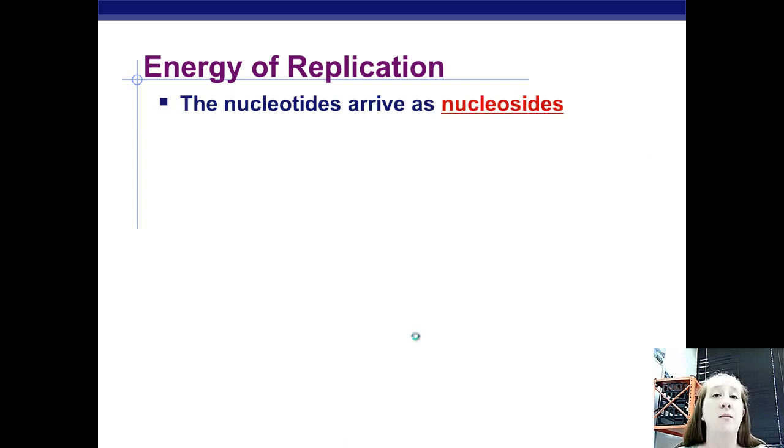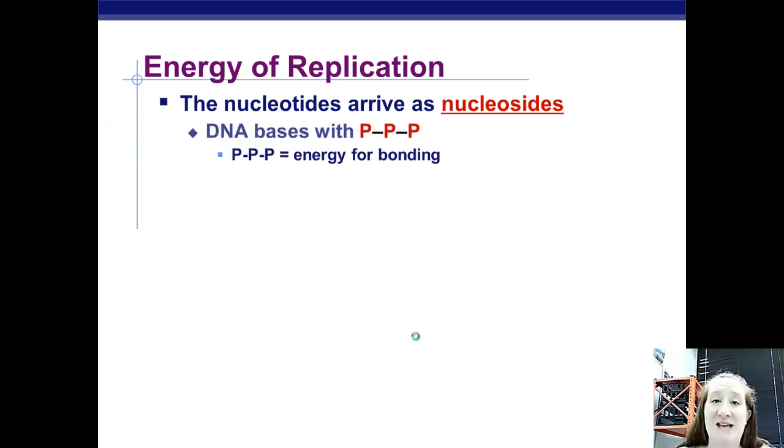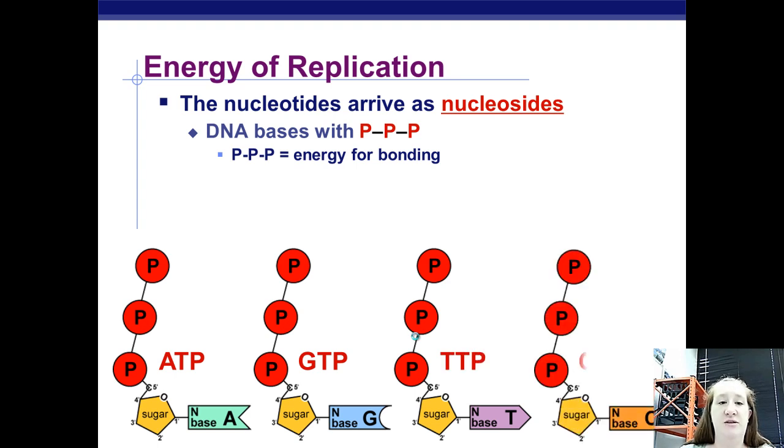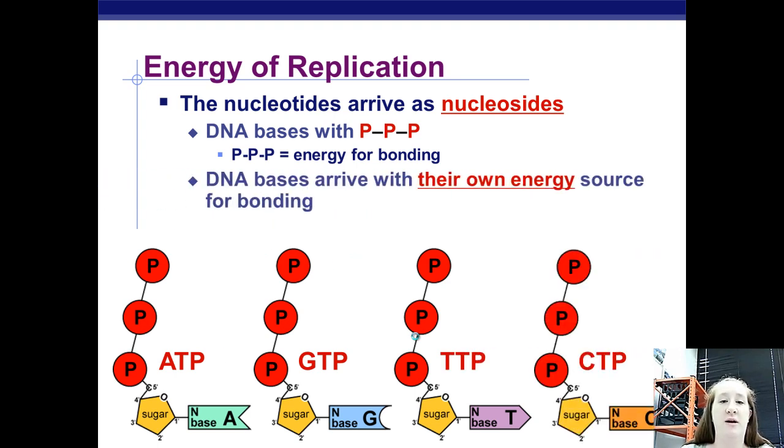So, when nucleotides come over to DNA to help with DNA replication or the building of a DNA molecule, they're going to come over as nucleosides, not nucleotides. And when they're nucleosides, they're in that TP state. They've got the three phosphates with them. So, they come over with those three phosphates with that energy that's going to then be used to make the bonds between the nucleotides. So, there's your ATP, your GTP, your TTP, and your CTP. They arrive with their own energy source.